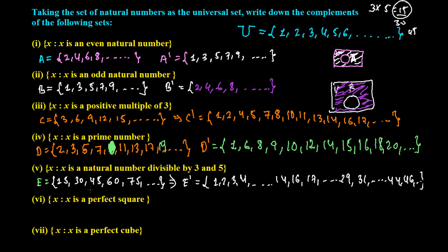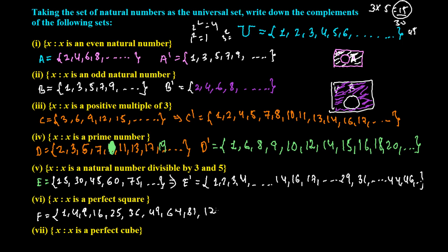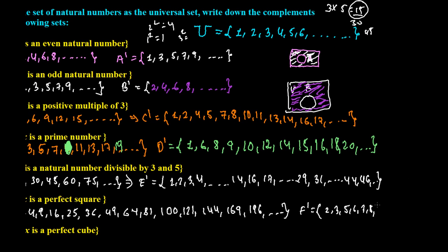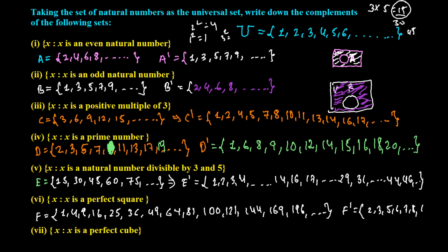Now set F, where X is a perfect square number. Perfect squares are 1², 2², 3², ... so: 1, 4, 9, 16, 25, 36, 49, 64, 81, 100, 121, 144, 169, 196, and so on. F complement means all natural numbers except these perfect squares: 2, 3, skip 4, 5, 6, 7, 8, skip 9, 10, 11, 12, and so on — all elements except the perfect squares.